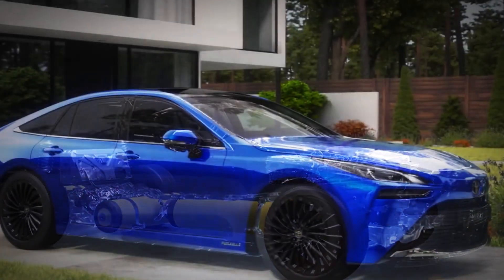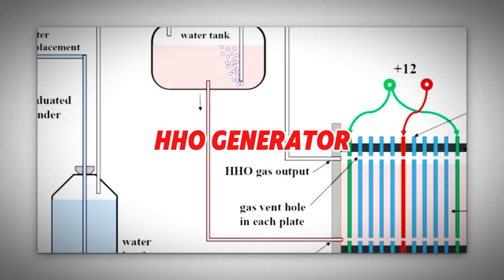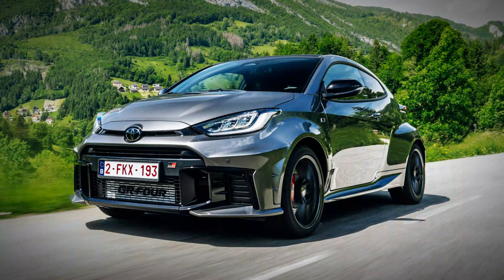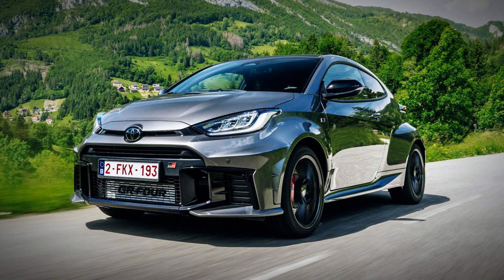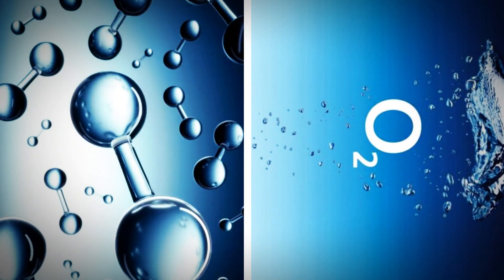So how does Toyota's water-powered engine work? The core mechanism is similar to an HHO generator but has been fine-tuned for practical use in vehicles. Much like the hydrogen combustion engine in the Toyota Yaris GRH2, this engine generates hydrogen on the go. Instead of relying on pre-processed hydrogen, it separates hydrogen from oxygen through a chemical reaction.